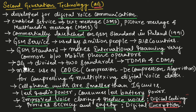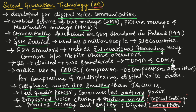The 2nd generation technology can be divided into 2 standards based on the type of multiplexing used. The first one is TDMA and the second one is CDMA. You need to remember that 2nd generation used 2 types of multiplexing techniques: TDMA as well as CDMA.